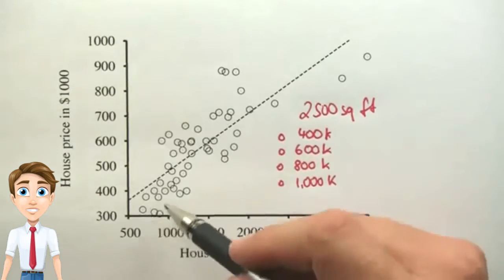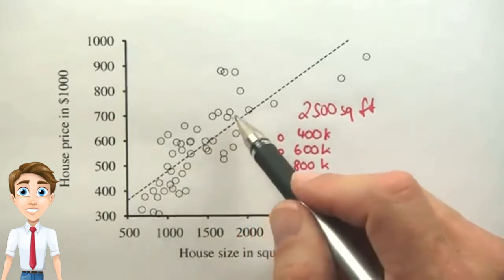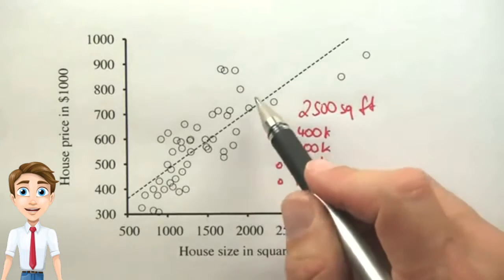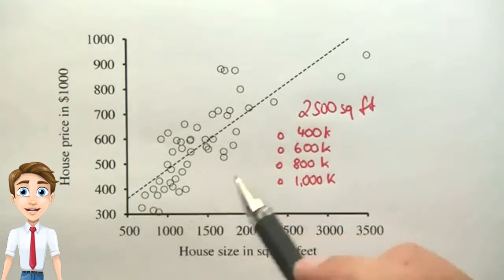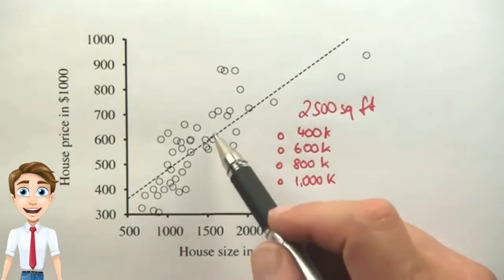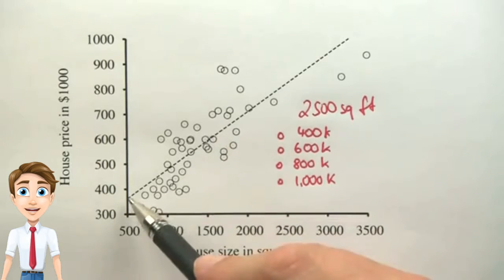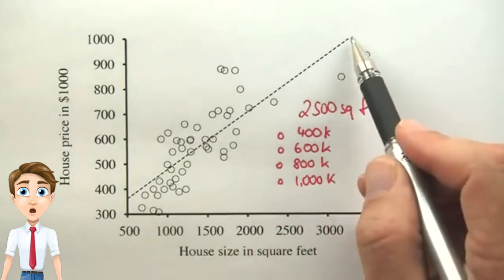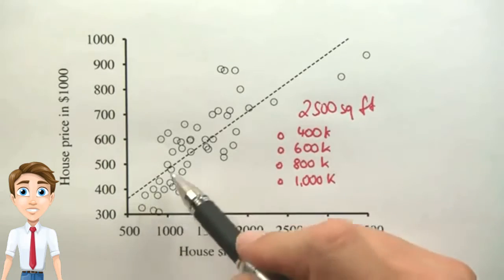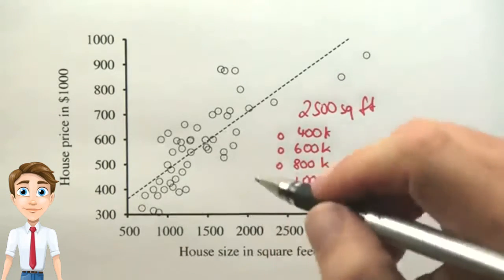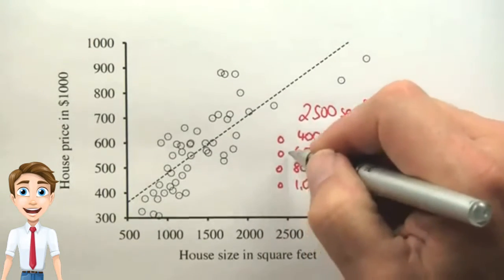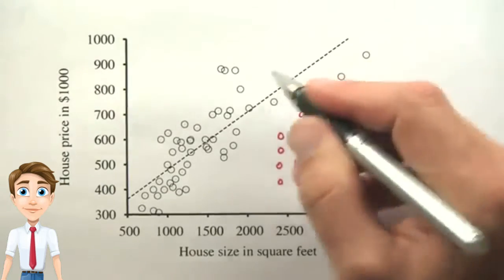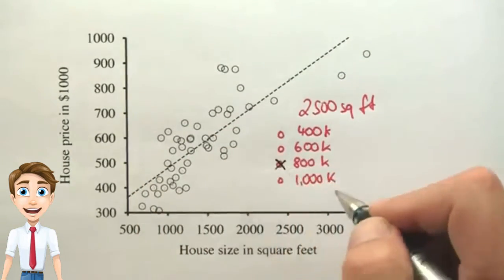And my answer is, there seems to be a roughly linear relationship, maybe not quite linear, between the house size and the price. So if you look at a linear graph that best describes the data, you get this dashed line over here. And for the dashed line, if you walk up to 2,500 square feet, you end up with roughly 800k. So this could have been the best answer.